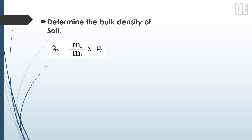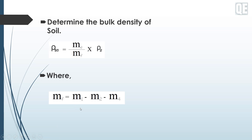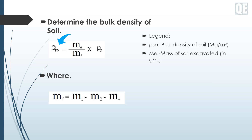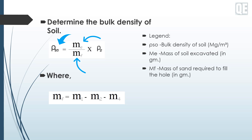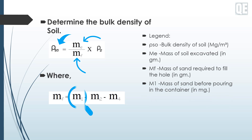Next, determine the bulk density of soil: ρso = me / mf × ρs, where mf = m1 − m2 − m4. ρso means bulk density of soil, me is mass of soil excavated, mf is mass of sand required to fill the hole, m1 is mass of sand before pouring into the hole, m2 is mass of sand and cone, and m4 is mass of sand after pouring into the hole.